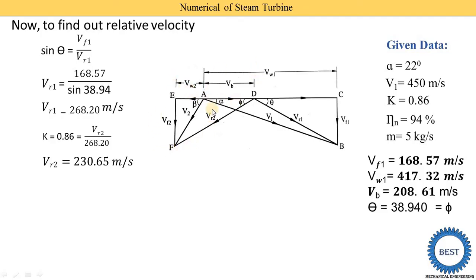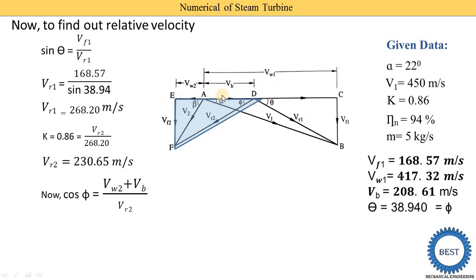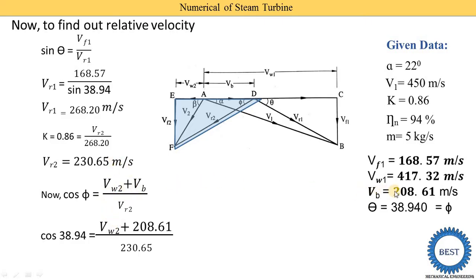We calculate Vw2 since only that parameter is needed for power, blade efficiency and stage efficiency. Solving triangle DEF and applying cos phi equals adjacent divided by hypotenuse: cos phi equals (Vw2 plus Vb) divided by Vr2. With phi equal to 38.94, Vb equal to 208.61, and Vr2 equal to 230.65, we get Vw2 equal to minus 28.6 meter per second.